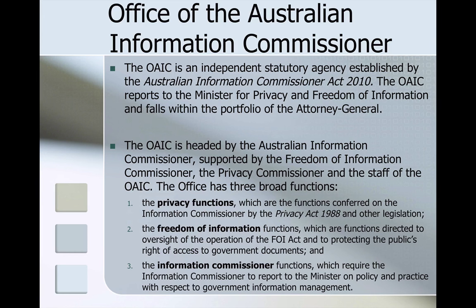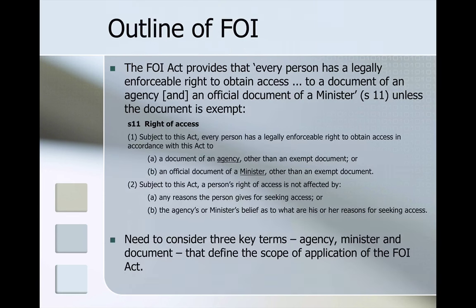The Office of the Australian Information Commissioner is an independent statutory agency established by the Australian Information Commissioner Act. It reports to the minister and falls within the portfolio of the Attorney General. It is headed by the Australian Information Commissioner, supported by the Freedom of Information Commissioner, the Privacy Commissioner, and the staff of the office. It has three main functions: privacy functions under the Privacy Act, Freedom of Information functions, and Information Commission functions.